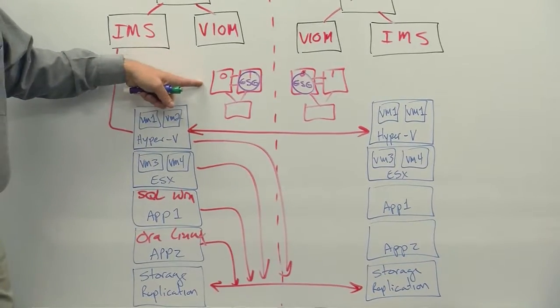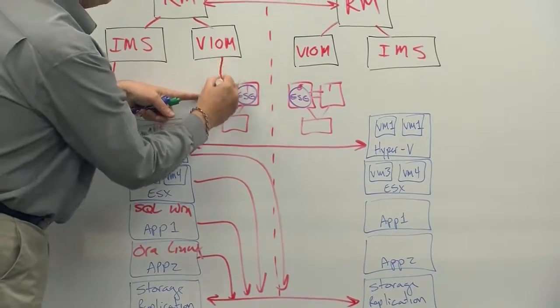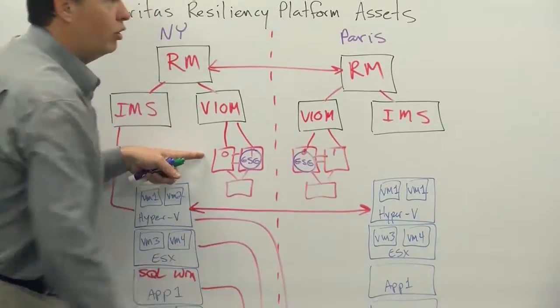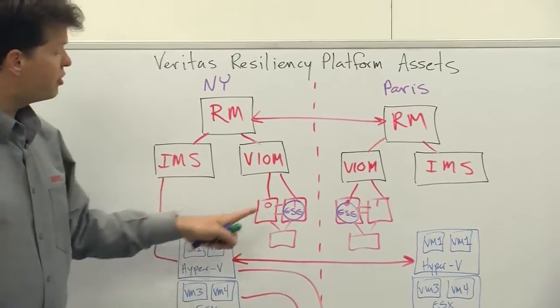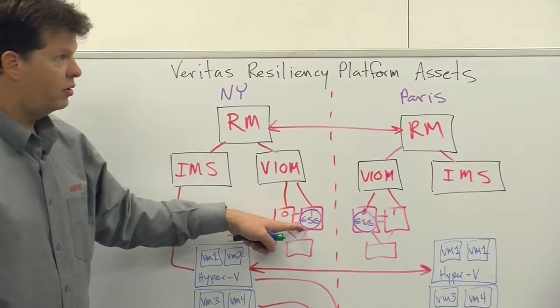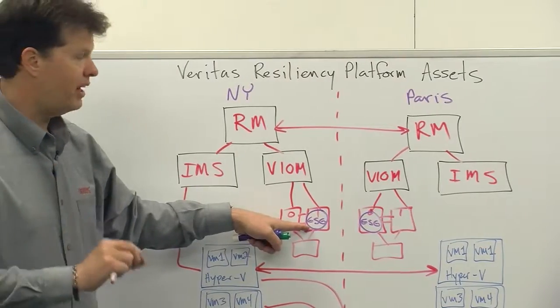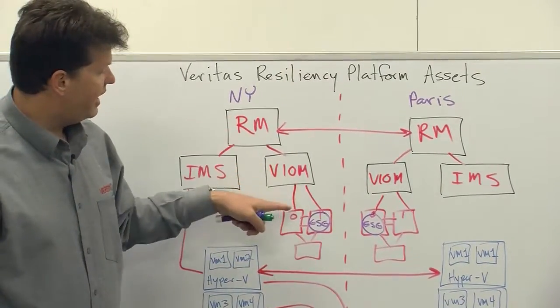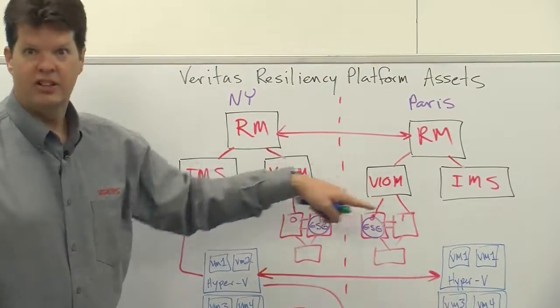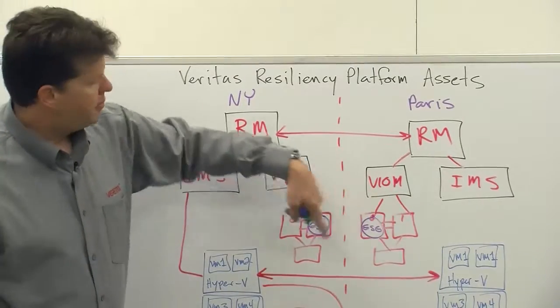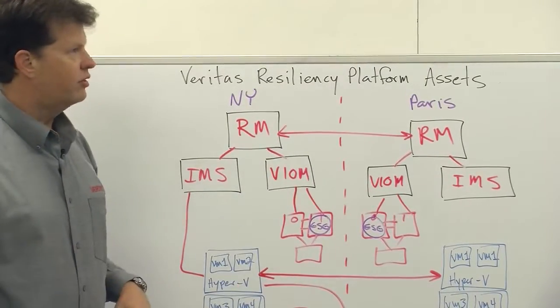We can also do this with VCS, via VOM, which will have a hook into a global cluster service environment where the service groups, the global cluster service groups, will be discovered with their associated applications. And then we basically have VCS, Veritas Cluster Server, do the migrations between sites and manage the replication reversals.